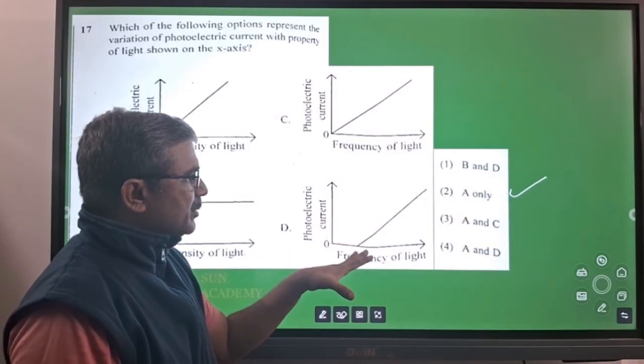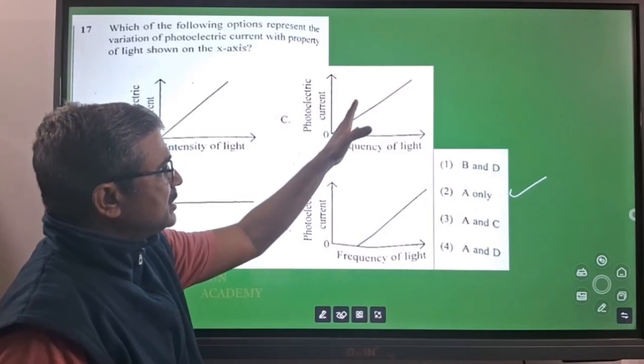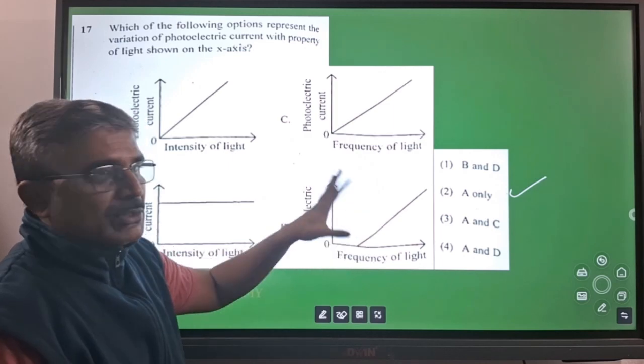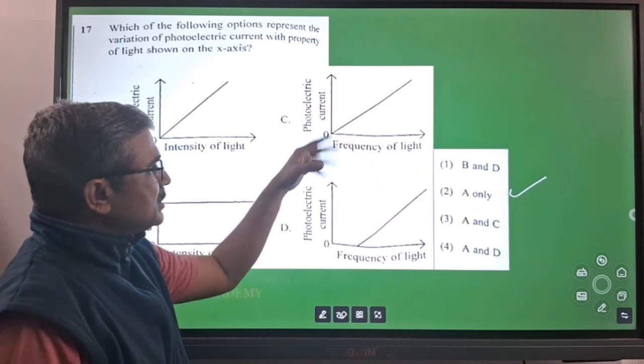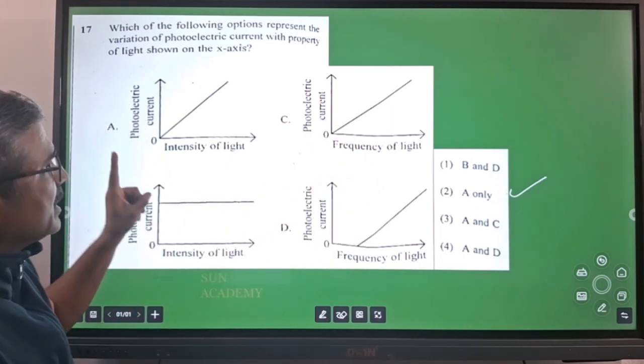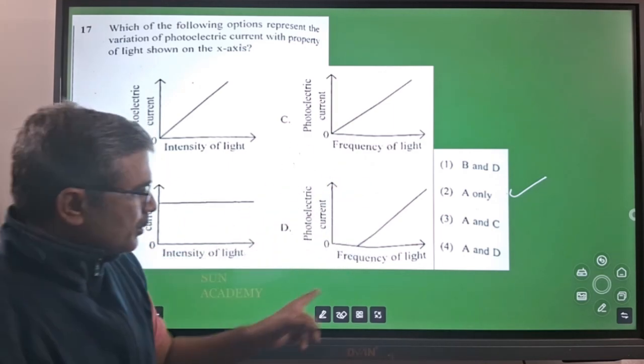Photoelectric current is not directly proportional to frequency of light because these two graphs represent those two are directly proportional. That is not correct. So these two are wrong. So only the thing is A is correct. So A only that is second option.